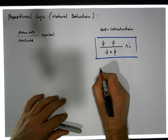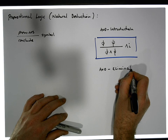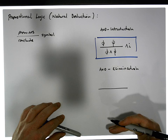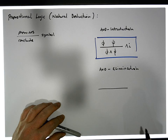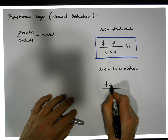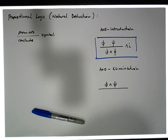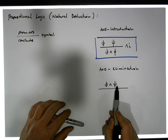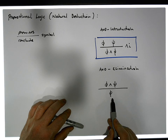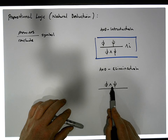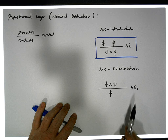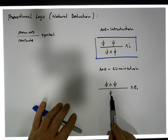Now AND elimination. If we've already proven somewhere within our proof that phi AND psi is true — either as an assumption or through deduction — well then we can conclude that phi must be true. We can take the left operand as true. This is AND elimination rule one, because there are two elimination rules. The first allows us to take the left operand.